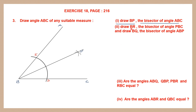Now look at question 2: draw BR, the bisector of angle PBC. We have angle PBC here and we need to draw its bisector and name it BR. We already have the main arc ED. Placing the compass needle at D and at the point we name F, place the compass at D and draw an arc between P and C. Then place the needle at F and cut that arc. Let's name that point of intersection R.